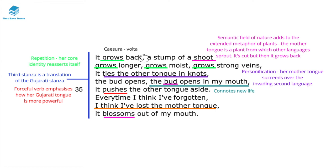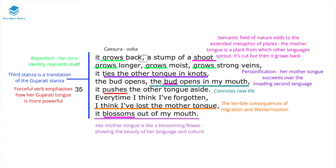The speaker states 'every time I think I've forgotten, I think I've lost the mother tongue' — showing the terrible consequences of migration and westernization, which can make it difficult to embrace a new identity without losing another. However, this also offers a glimmer of hope: even while experiencing this difficulty, the speaker has a core sense of who they are that reasserts itself. In the final line, 'it blossoms out of her mouth' shows the mother tongue as a blossoming flower — symbolizing the beauty of her language and appreciation for her original culture.